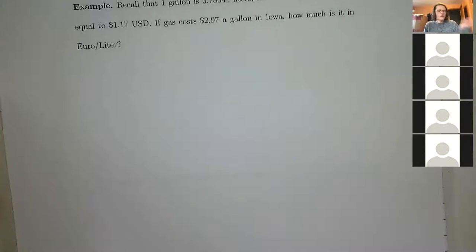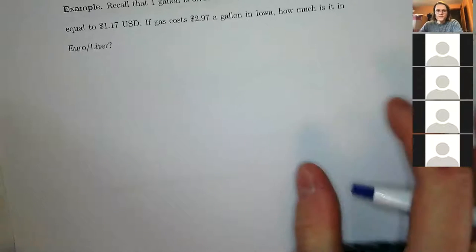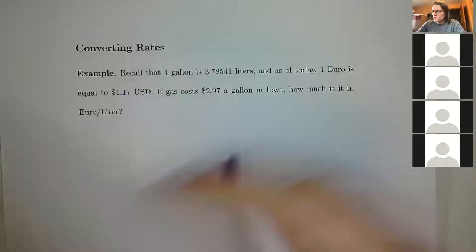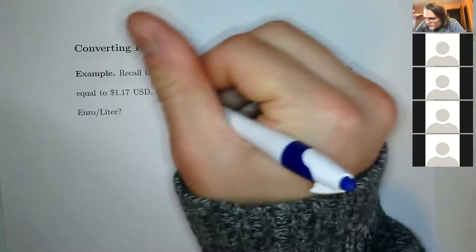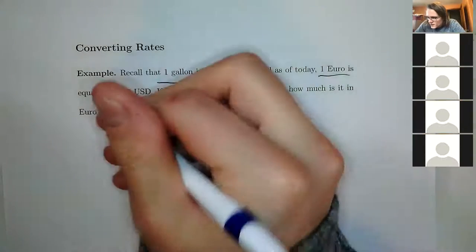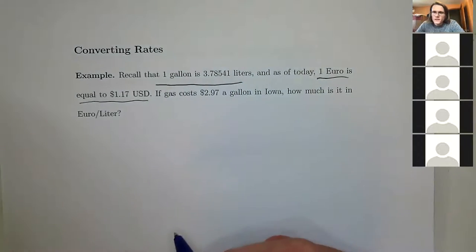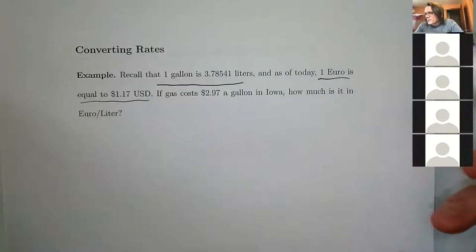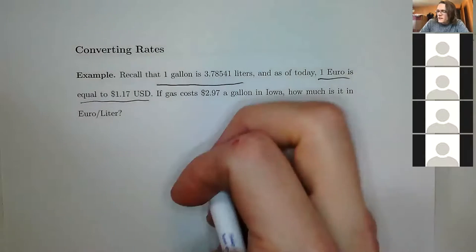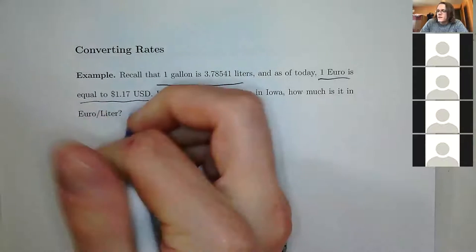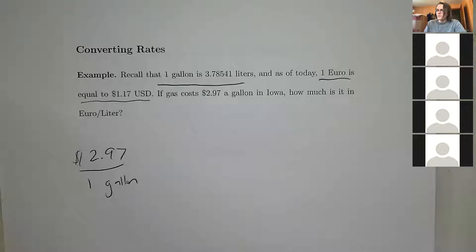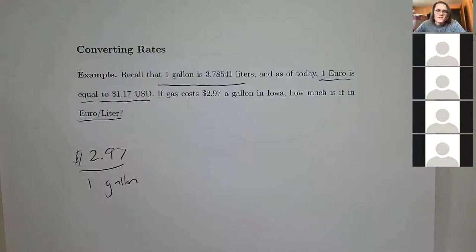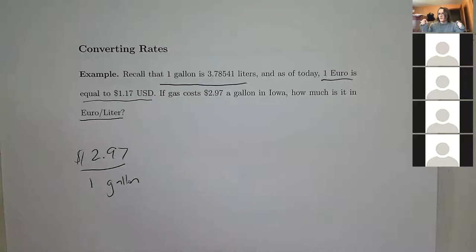Now: how do we convert rates into different rates? I give you: 1 gallon = 3.785 liters, and 1 euro = $1.17 USD. Gas costs $2.97 per gallon in Iowa. How much is that in euros per liter? So I need to convert USD/gallon into euros/liter — two independent unit conversions.